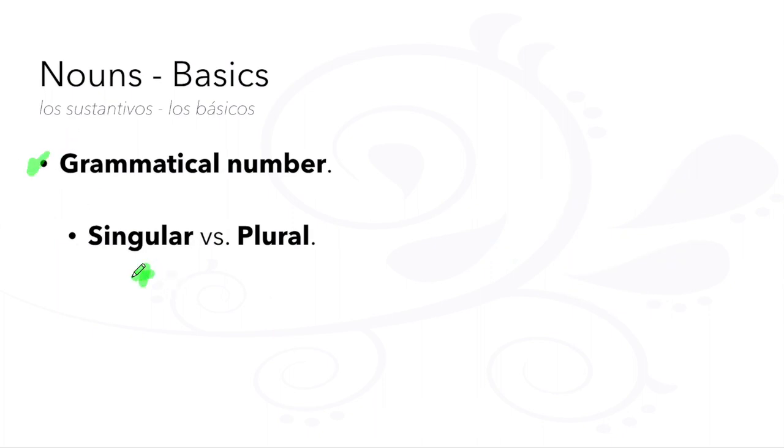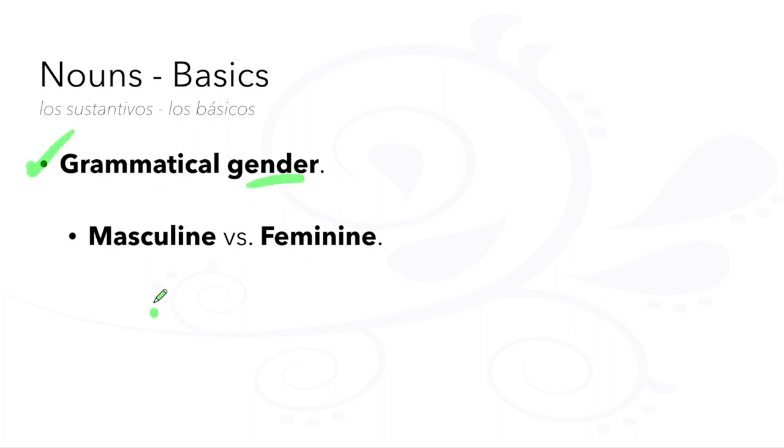Grammatical number means that there is one thing or there are many things. In Spanish there is grammatical gender, which means that there are masculine nouns and feminine nouns.